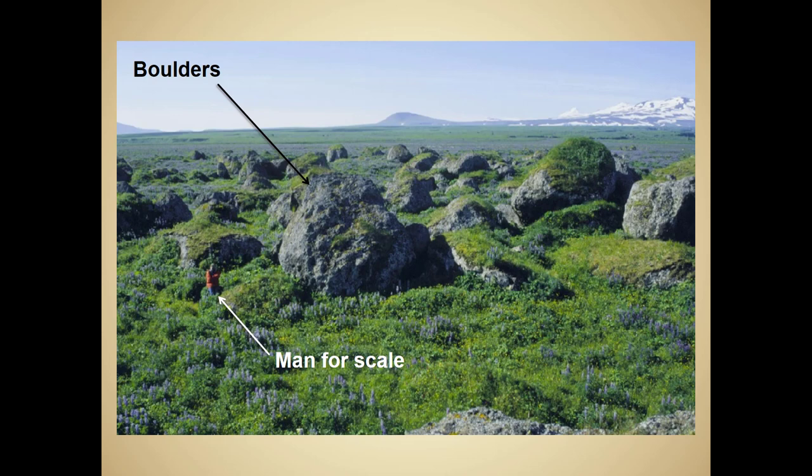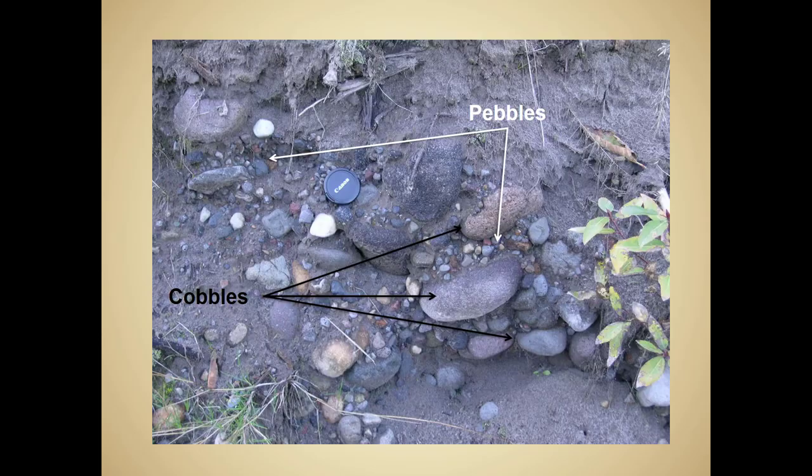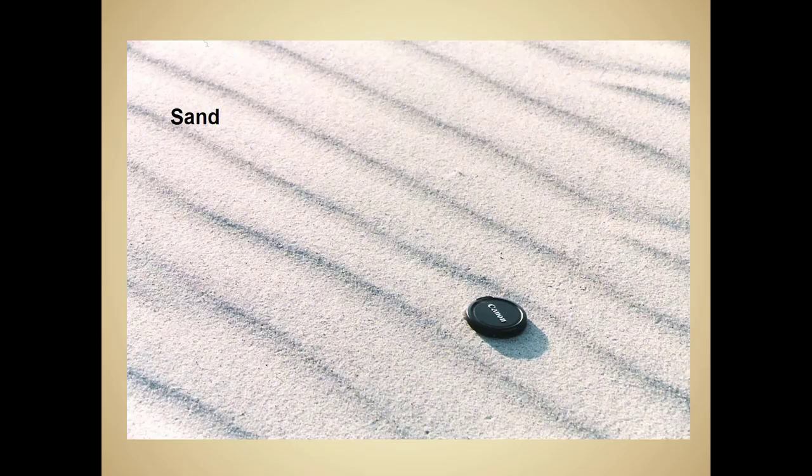Here we have the coarsest of our grain sizes. There's a man there for scale — these are obviously boulder sizes, larger than that 25.5 centimeter threshold. Going down, we now have in this picture cobbles and pebbles. The cobbles are a little bit larger, whereas the pebbles are the smaller sizes. All of these collectively are larger than that 2 millimeter size.